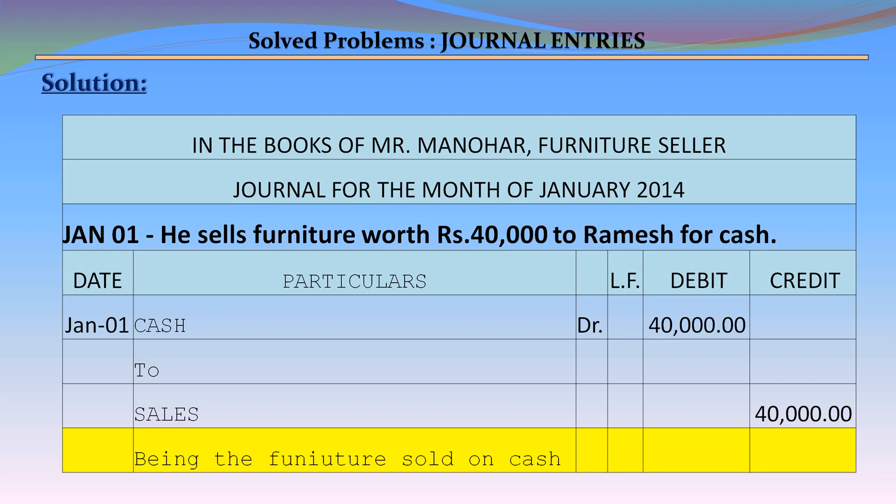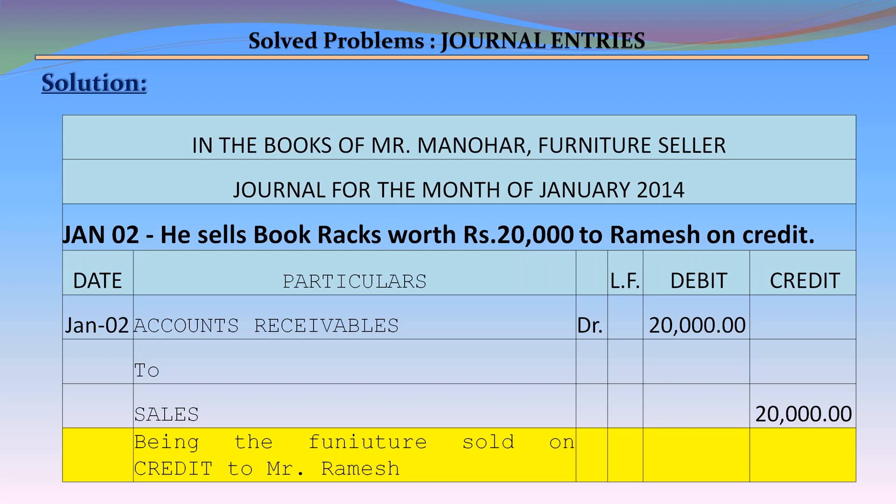January 2 – He sells book racks worth Rs. 20,000 to Ramesh on credit. Journal entry: Accounts Receivable debit Rs. 20,000 to Sales Account credit Rs. 20,000, being the furniture sold on credit to Mr. Ramesh.